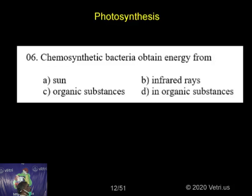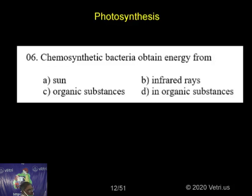Chemosynthetic bacteria have no pigments, so they have to get energy by oxidizing both organic substances and inorganic substances. If it is an inorganic substance, they are chemolithotrophs; if it is an organic substance, they are chemoorganotrophs.